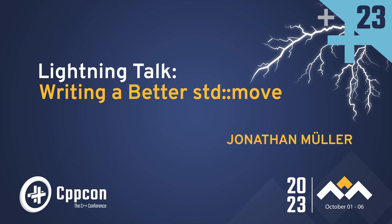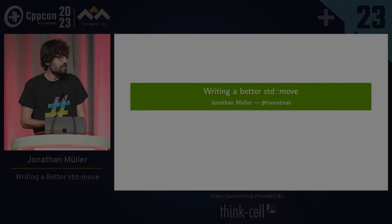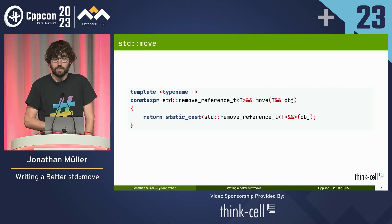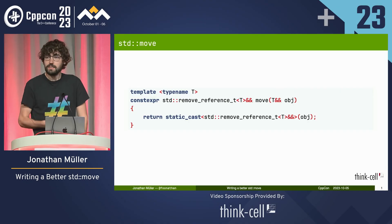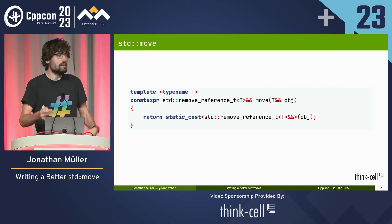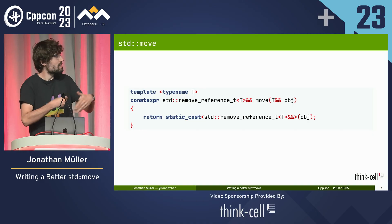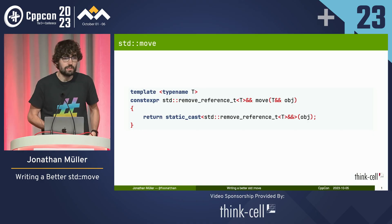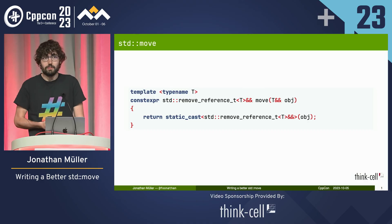I recently refactored our std::move implementation in our codebase. Why did I do that? Here's the standard library implementation of move — it takes anything and then changes the reference to be an R-value reference essentially. Fine enough, so what's the problem?